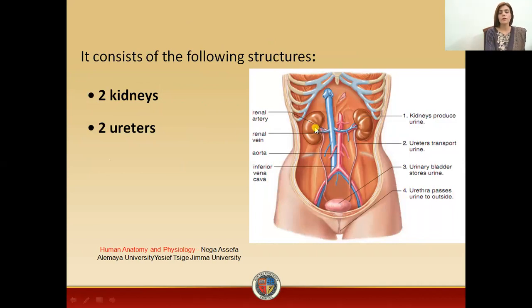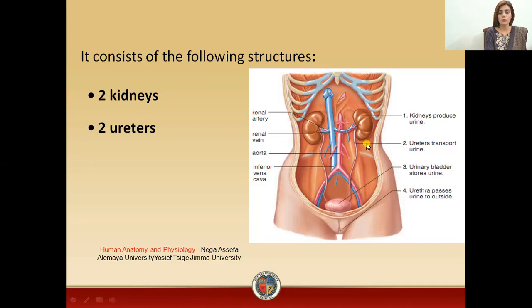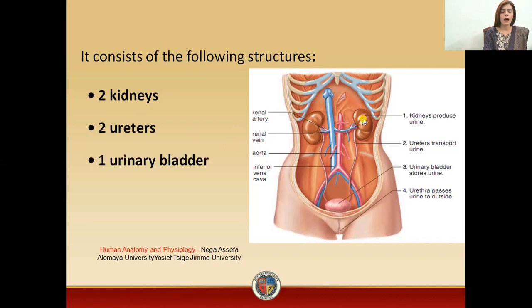The urinary system is composed of kidneys. There are two kidneys in your body. The components include a pair of kidneys, then you have two ureters — these are the pipes which are connected to the kidney. After that, you have a urinary bladder.